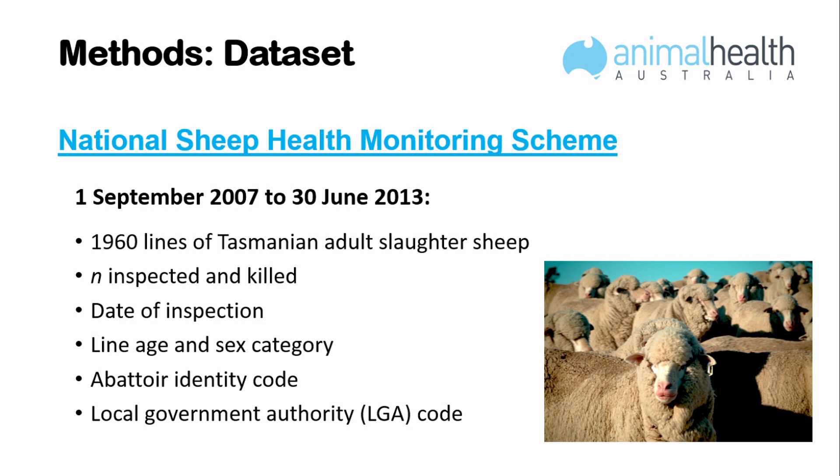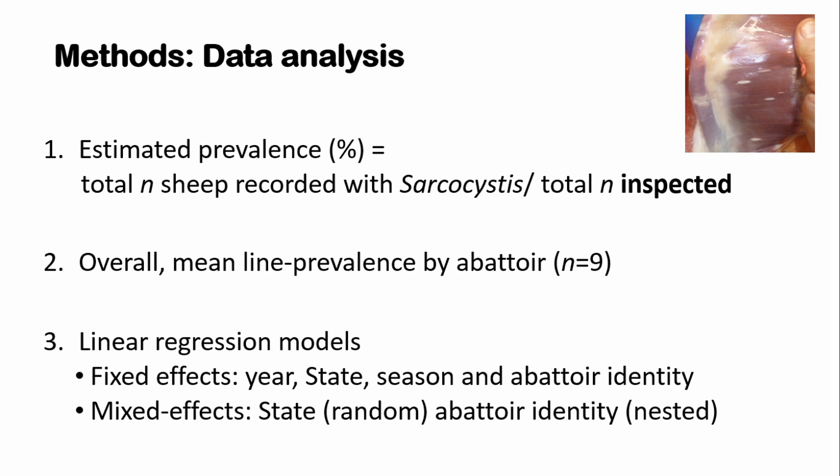The data I had access to from Animal Health Australia covered September 2007 to June 2013, containing only data regarding Tasmanian adult slaughter sheep. It included the number inspected and killed, the date of inspection, the category of age and sex, an abattoir identity code, and the area the sheep came from. My aims for analysis were to estimate prevalence — determined over the number inspected — a mean line prevalence across the nine slaughterhouses, and regression modelling to look at the effect of season and year.